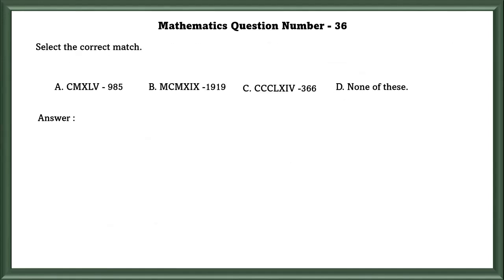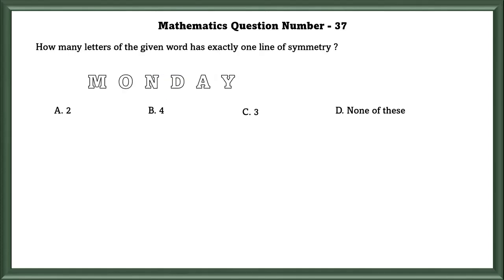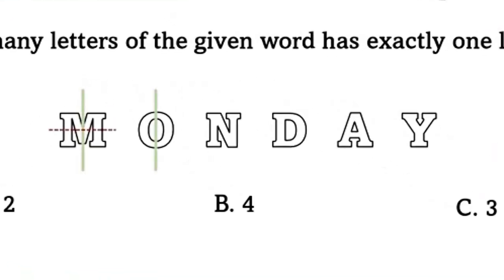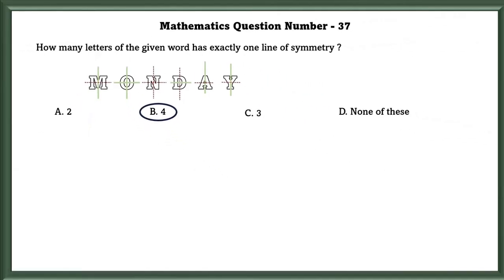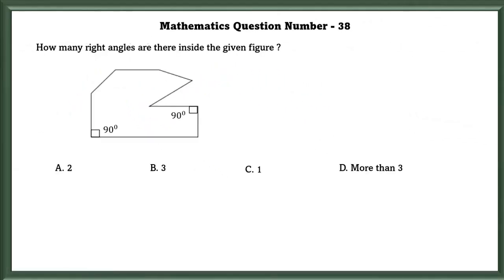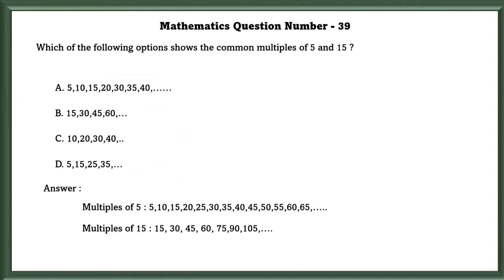Mathematics question number 36. Select the correct match. A is wrong because the roman numeral given is actually 945. B is correct. C is also wrong. So our answer is B. Mathematics question number 37. How many letters of the given word have exactly one line of symmetry? Here the letters with exactly one line of symmetry are M, D, A and Y. So the answer is 4. Mathematics question number 38. How many right angles are there in the given figure? There are 3 right angles in the given figure.